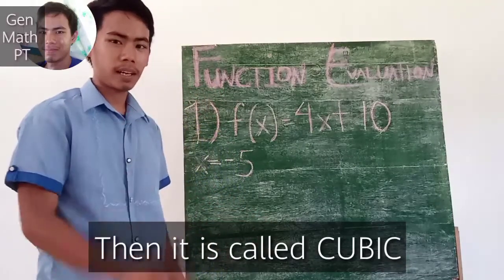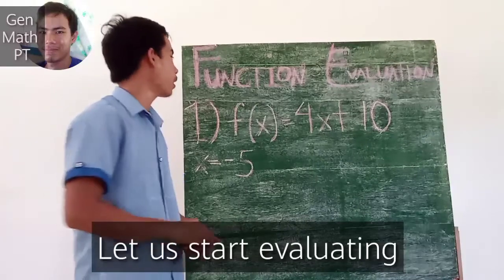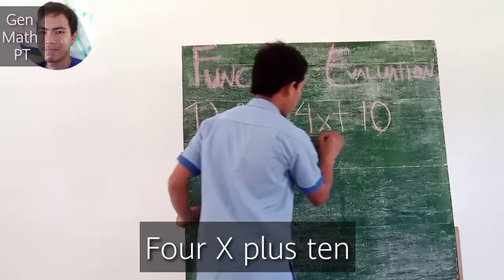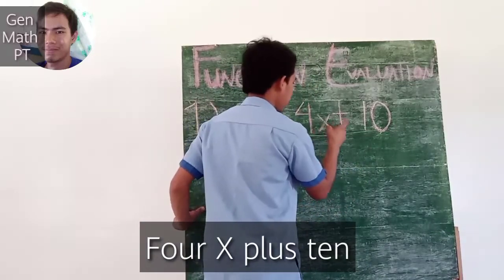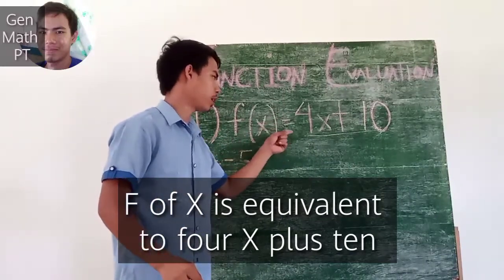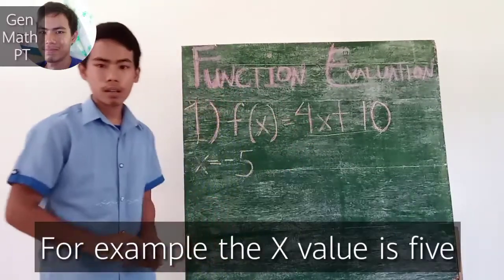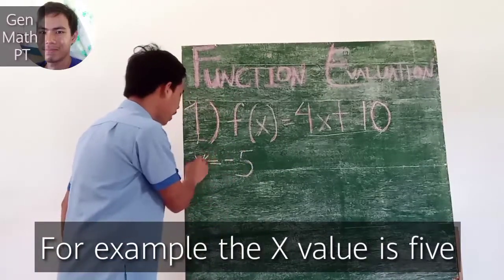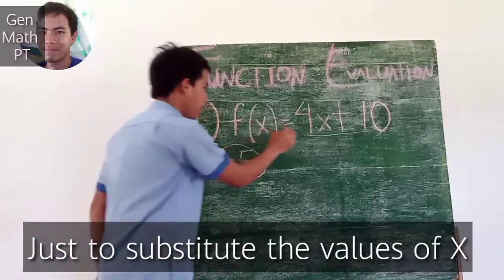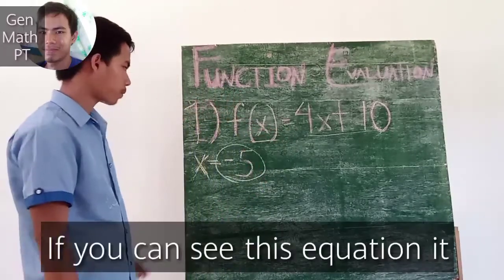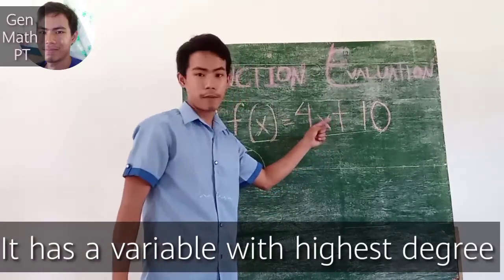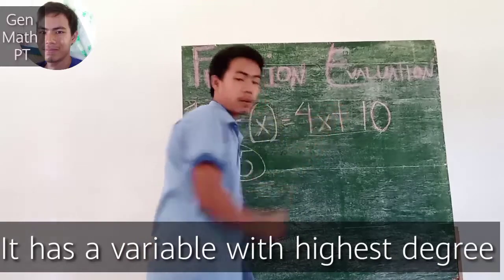Without further any rumor, let us start evaluating. For example, this equation: f(x) = 4x + 10. For example, the x value is 5. The only way to evaluate is just to substitute the values of x. If you can see this equation, it has a variable which has the highest degree of 1.